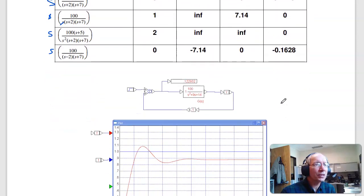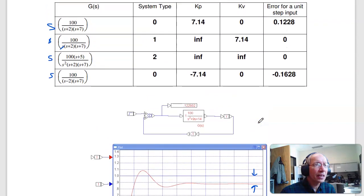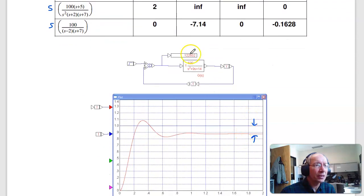Now what the steady state error corresponds to is if you take your system, close the feedback loop, here's where I want to go - 1, here's where I actually am, and this is the steady state error. That equals 0.1228. For the first case, when it's negative, I'll actually overshoot by 0.16.